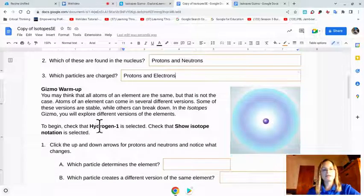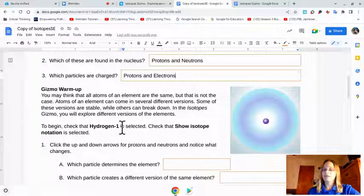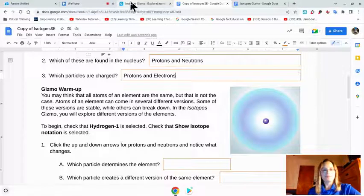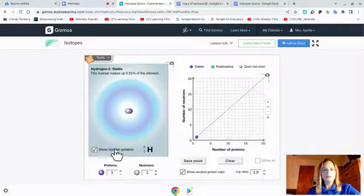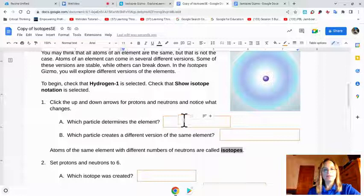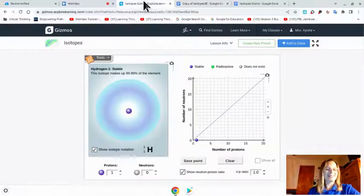So it says, check that hydrogen-1 is selected, and check show isotope notation is selected. Hydrogen-1, show isotope notation. I got to move that. Perfect! Look at us. We're professionals. Now we're going to play around with the protons and neutrons and see what changes. Exciting, right?